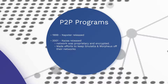P2P programs burst onto the scene in the late 1990s. Napster was established in 1999 for sharing music files. KAZA was another P2P application that used supernodes, which increased file routing efficiency. KAZA's network was proprietary and encrypted.